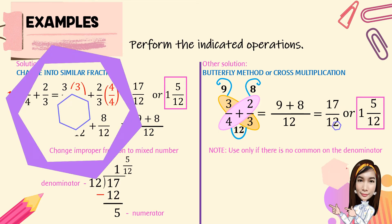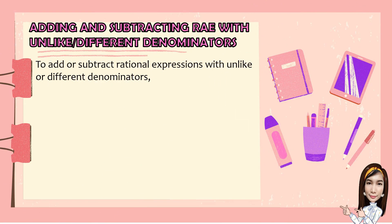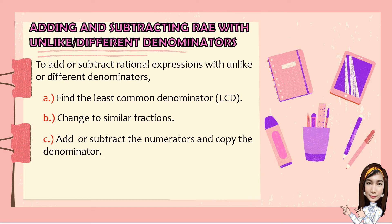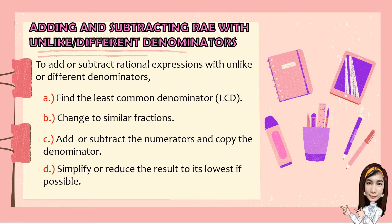To add or subtract rational expressions with unlike or different denominators: first, find the least common denominator or LCD. Second, change to similar fractions. Third, add or subtract the numerators and copy the denominator. And last, simplify or reduce the result to its lowest if possible.